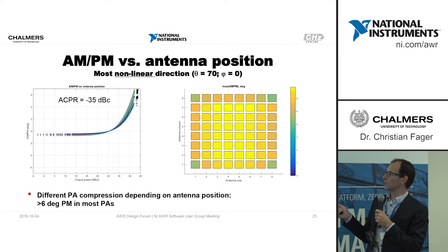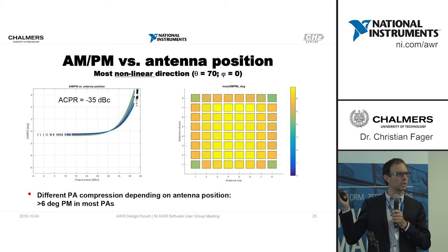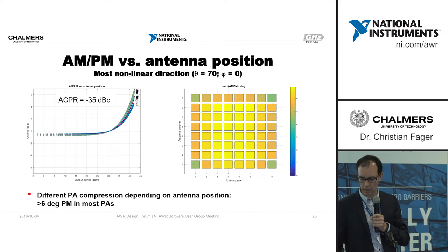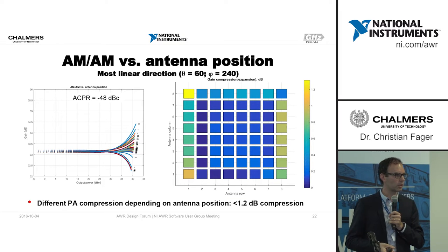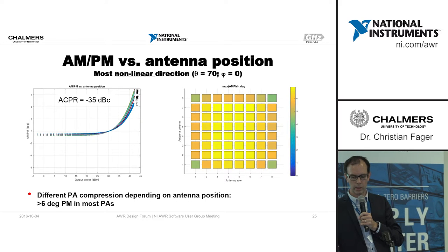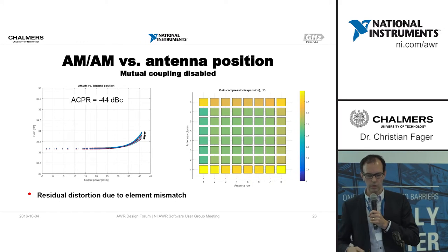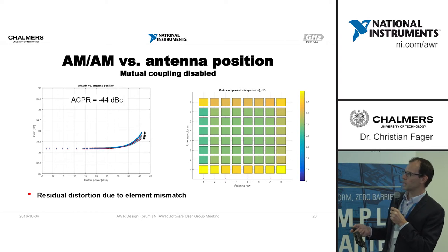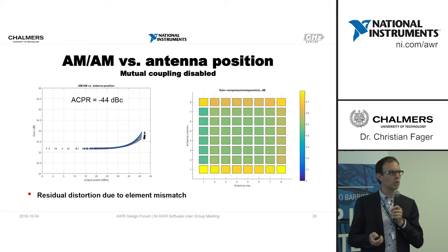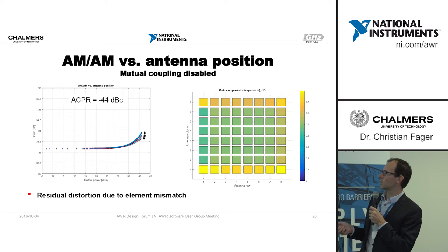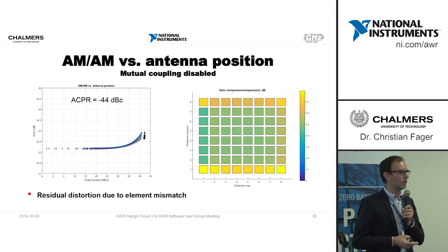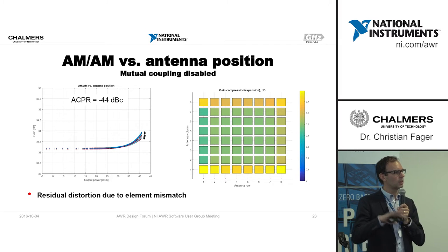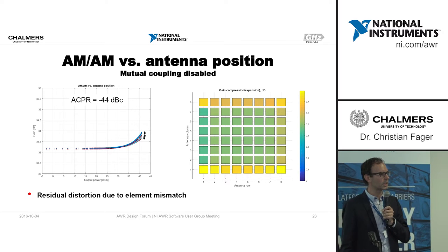This explains what happens: in the worst direction all PAs align in a bad way, while in the good direction their distortions cancel each other, giving a relatively linear average PA response. For reference I also made a case where I switched off mutual coupling in the antenna array — then there is no dependence on scan angle. There is still some expansion because the amplifier was linearized to 50 ohm but the antenna elements are not perfectly matched to 50 ohm, so they have a slightly different compression characteristic compared to the 50-ohm case.